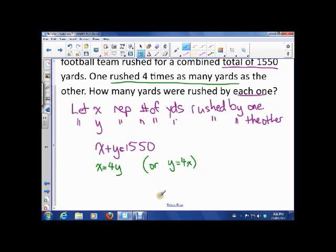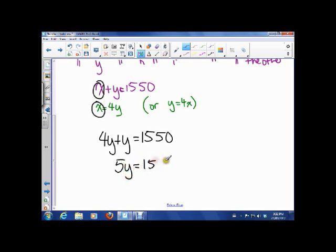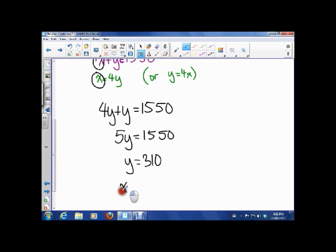So now all we have to do is solve this system. And how are we going to do that? Well, this is actually perfectly set up for substitution. So instead of x plus y, I'm going to say 4y plus y equals 1550. So that means 5y is 1550. So that means y equals 310. And that means that we can substitute that into this equation and say x equals 4 times 310, which means x is 1240.